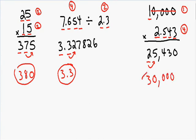I know this seems crazy for a lot of students because 30,000 is not even close to 25,430. But our final answer can only be as precise as the numbers we just multiplied together. If we multiply 10,000, which only has one significant digit, we can't misrepresent our final answer. 25,430 is much more precise than 10,000, so that's why we have to have a final answer of 30,000 when rounding using significant digits.